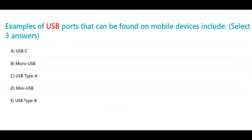Examples of USB ports that can be found on mobile devices include — select three answers: A. USB-C, B. Micro USB, C. USB Type A, D. Mini USB.